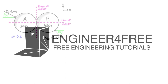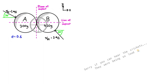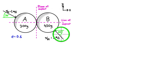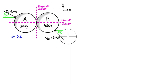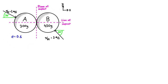Welcome back. We've got one last example here on collisions — in this case it's an oblique impact example. We've got two bodies, A and B, with different masses: 300 grams and 450 grams. They're coming in at different angles to the plane of impact. A is coming in 30 degrees relative to the line of impact, and B is coming in at 50 degrees off the horizontal. The coefficient of restitution e is equal to 0.6, so this is neither perfectly plastic nor perfectly elastic — it's somewhere in the middle.